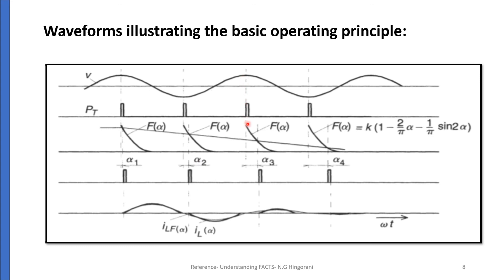In the third half cycle, the ILF characteristics and the required value of fundamental current are used. The point of intersection gives alpha 3. Starting from the peak of the voltage up to this point, a timer circuit is set and the pulse is triggered at that instant to obtain alpha 3 as the firing angle and hence achieve the required ILF value. By this method, ILF can be controlled in each half cycle to fulfill the reactive power requirement of the system using FCTCR.